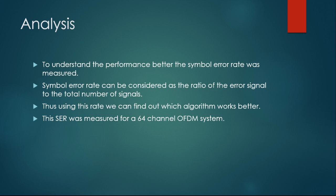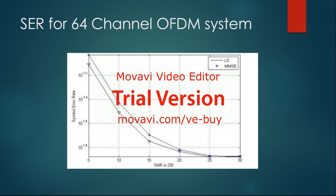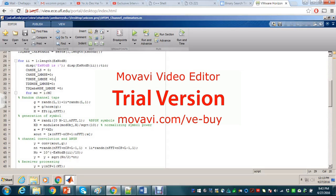The symbol error ratio was also measured for a 64-channel OFDM system to see how the MMSE and LS algorithms perform. We can see that the MMSE algorithm performs better when compared to the LS.